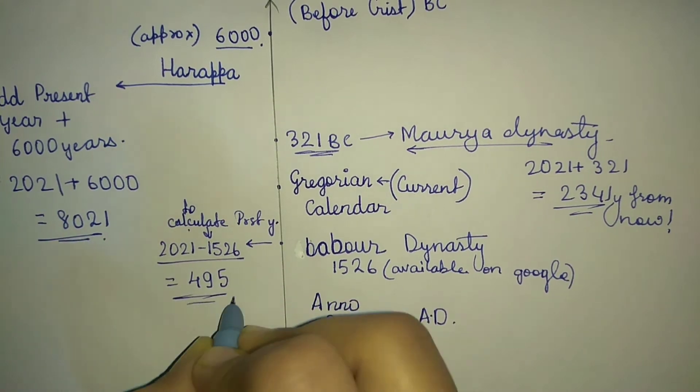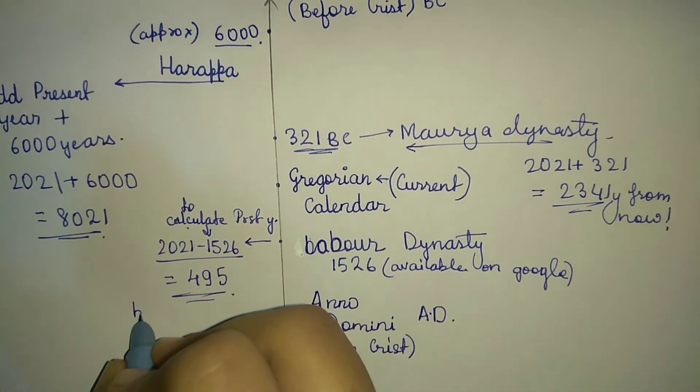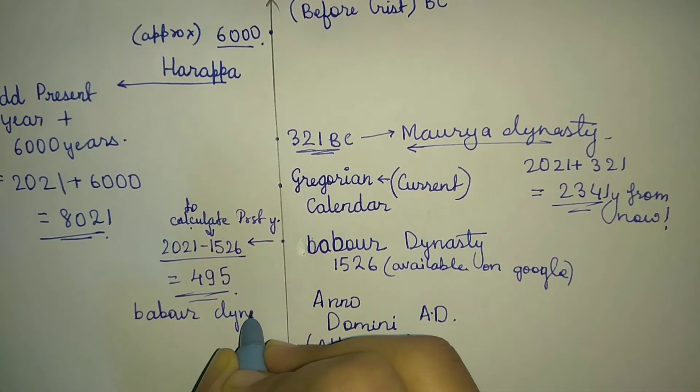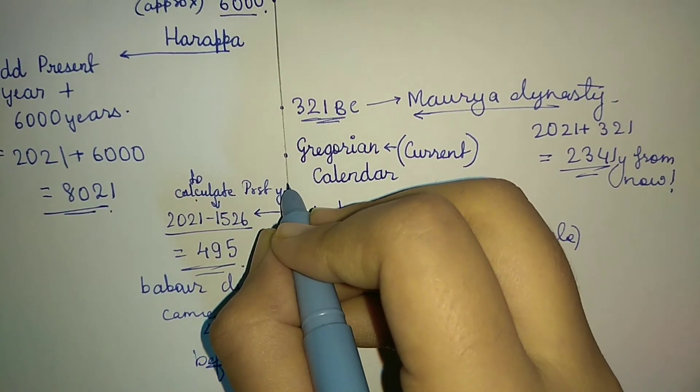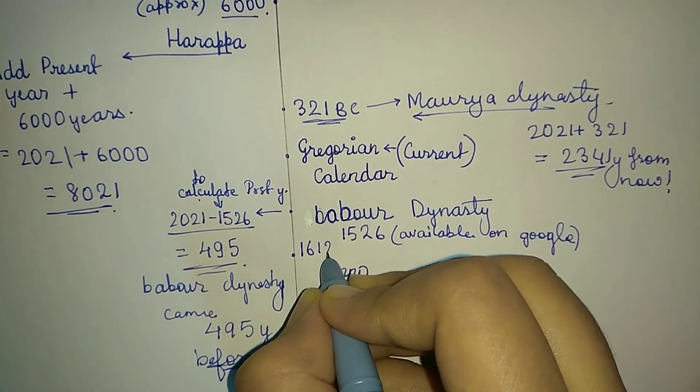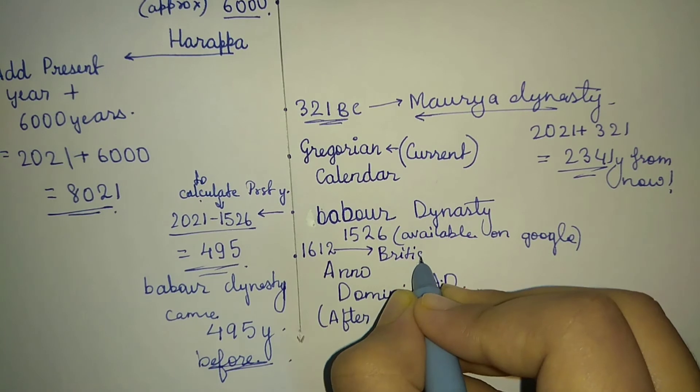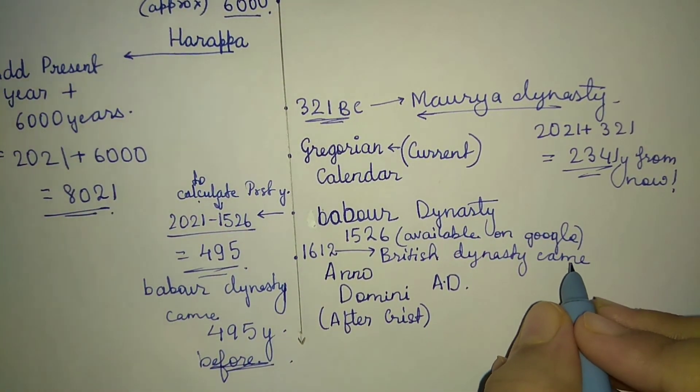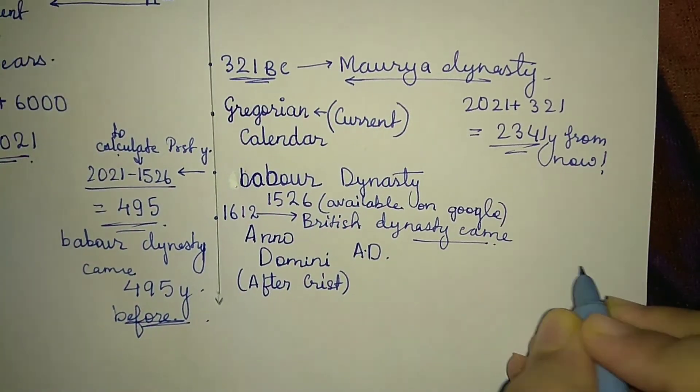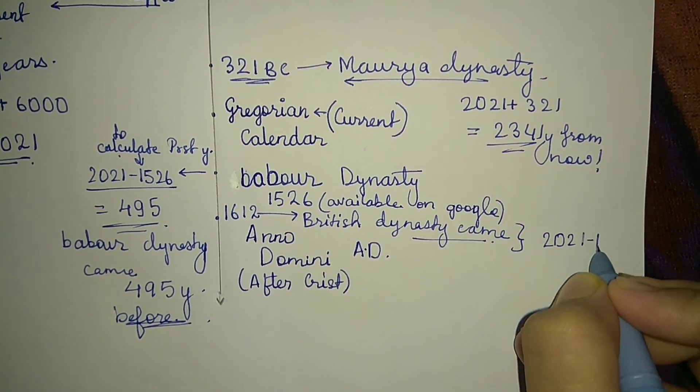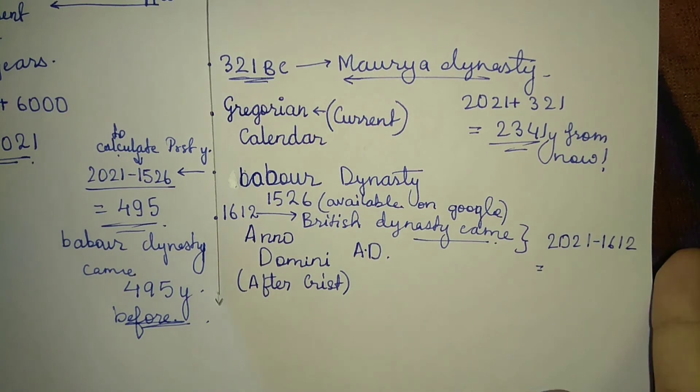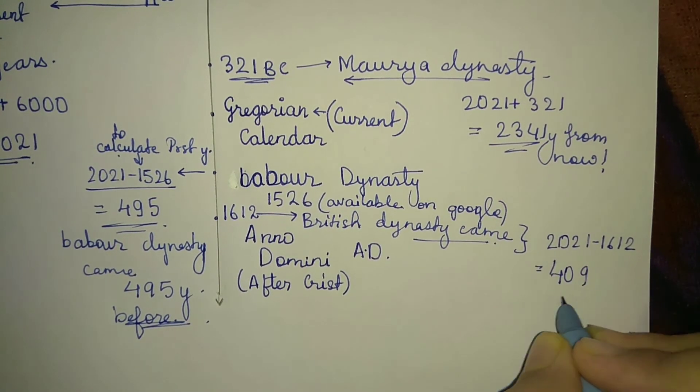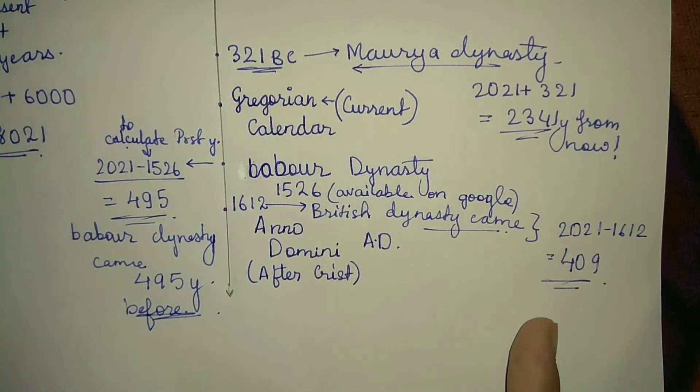Another example for calculating AD years: the British Empire came to India in 1612. To find how many years ago this was, we subtract: 2021 - 1612 = 409. So the British came to India 409 years ago.